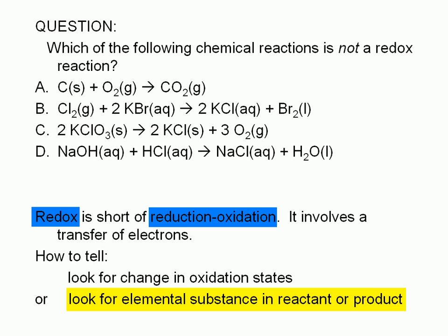Let's examine the choices given here. In choice A, we have two elemental substances involved as reactants: carbon and oxygen. So the combination of carbon and oxygen to form carbon dioxide is a redox reaction. A combination reaction involving at least one elemental substance is a redox reaction.